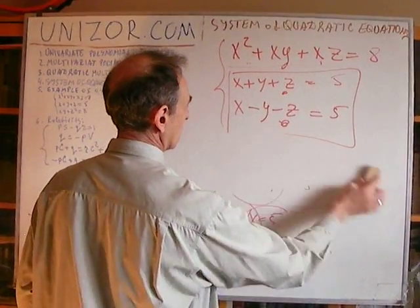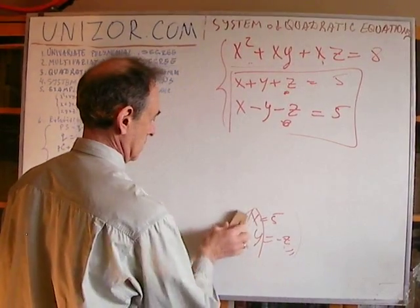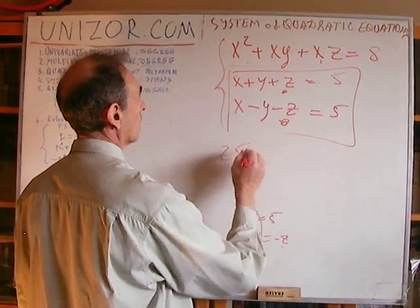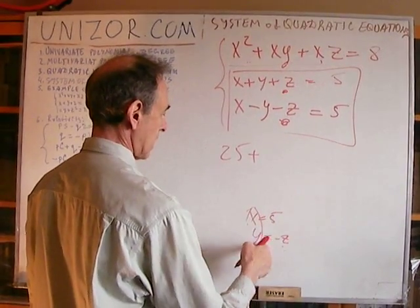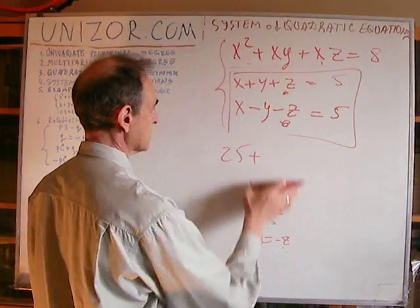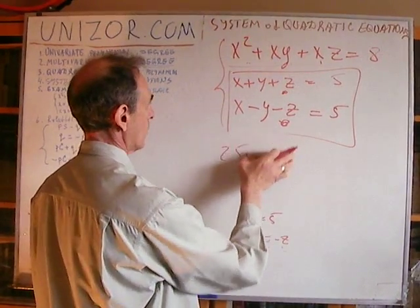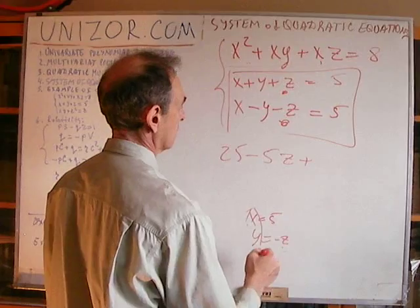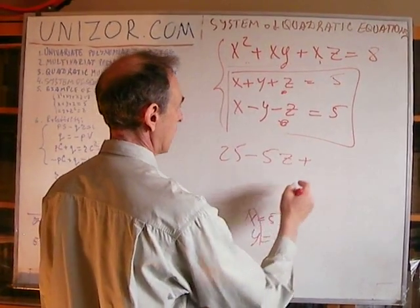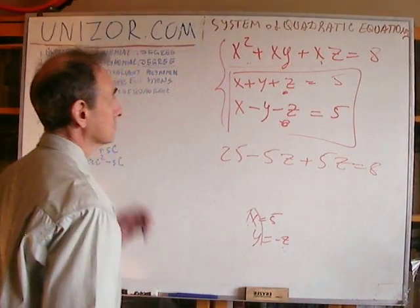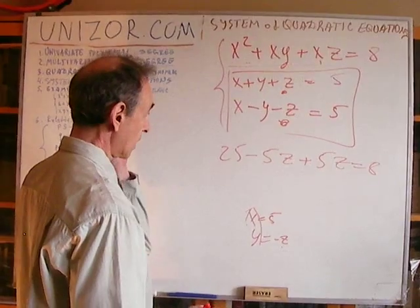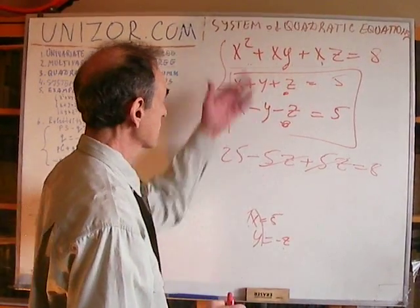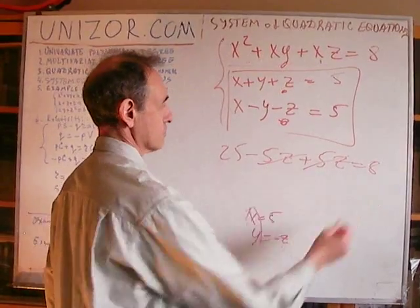Now considering this, you can substitute both X and Y into the first equation, which is of second degree — a real quadratic polynomial. Since all variables are expressed as linear functions of Z, the result will be a quadratic equation in Z. Let's write it: instead of X I put 5, so X² is 25. Plus XY, which is 5 times minus Z, that's minus 5Z. Plus XZ, which is 5Z. This equals 8. In this particular case I have a contradictory equation — I just made it up and didn't think carefully — so this system doesn't have a solution because I get 25 equals 8.